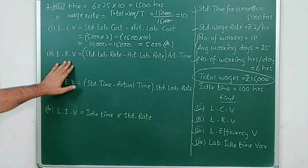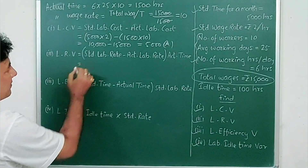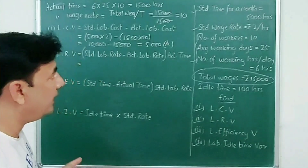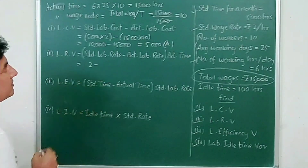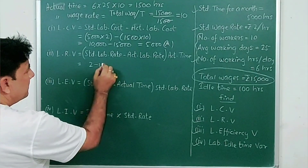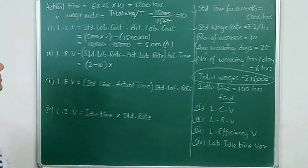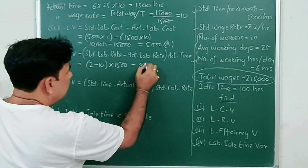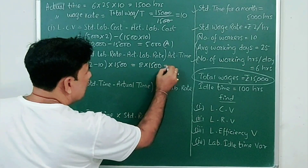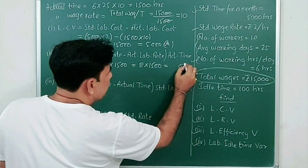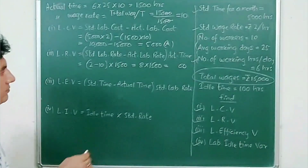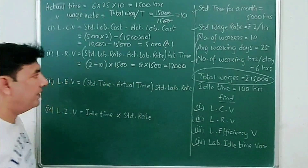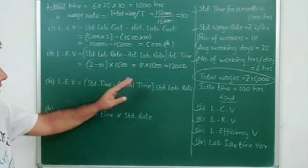For labor rate variance: standard labor rate (₹2) minus actual labor rate (₹10), multiplied by actual time of 1500 hours. The difference is 8 into 1500, which equals 12,000. This is also adverse.